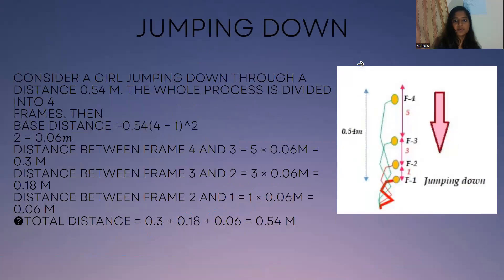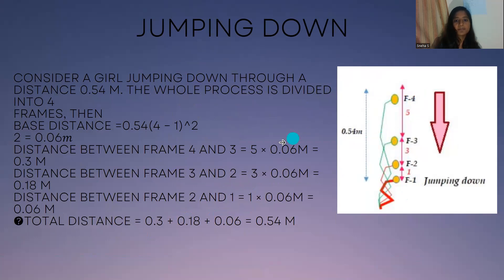Next is the jumping down process. Here the frame is divided into four portions. We take the frame distances in reverse order — 4, 3, 2, 1. Taking the distance between frame 3 and frame 4 and multiplying by the base distance found using the formula, then summing up the process, we get the base distance equal to 0.54. The odd rule is used in such scenarios to calculate the distance between successive frames.